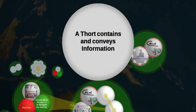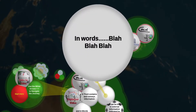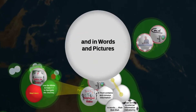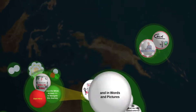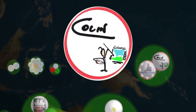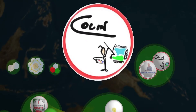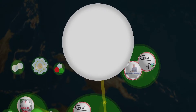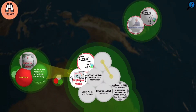In thought space, a thought contains and conveys information in words and pictures, or maybe just a picture. Thought ideas can be linked using paths and also grouped together into groups. Groups and thoughts can also be linked together with paths.